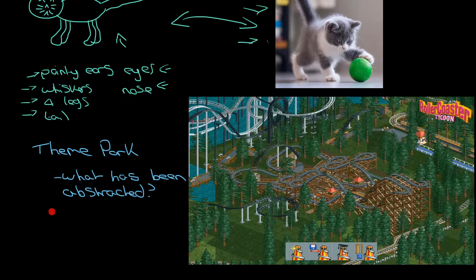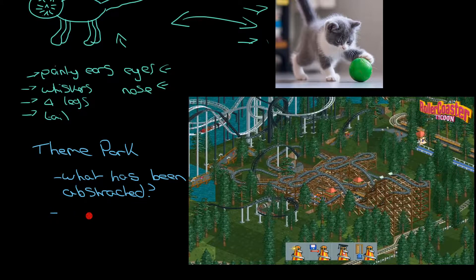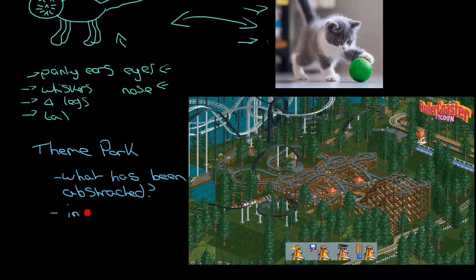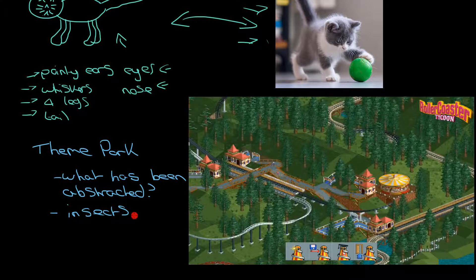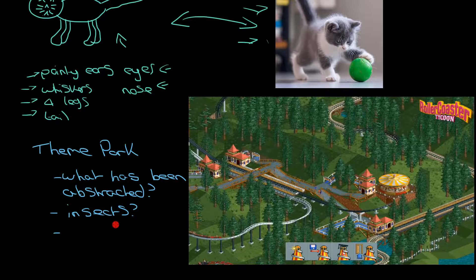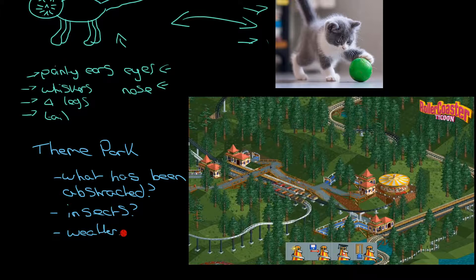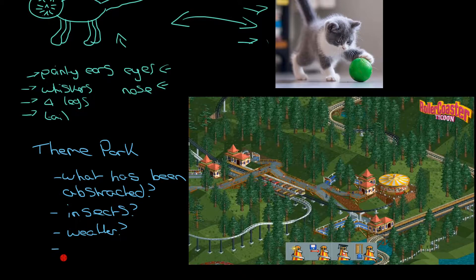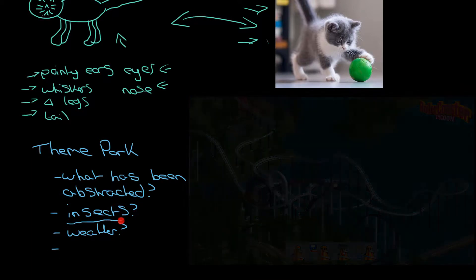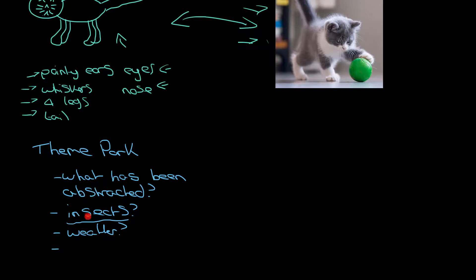You might see we've got things like roller coasters and stuff like that but we haven't got things like insects. There's no insects in that game that you can see. Okay we've got crowds of people and things like that in it but we haven't got any sort of simulation of any sort of weather that I can see. I can't see any clouds or any sort of rain.